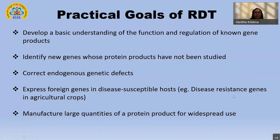What are the practical goals of RDT? One thing is we want to develop a basic understanding of the function and regulation of genes which are already known. In order to do that, I obviously want to first clone the gene into a particular vector, then prepare it in large scale so I can use it for downstream processing. This is with respect to genes which are already identified.